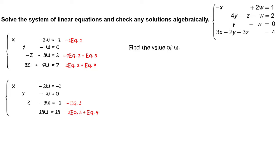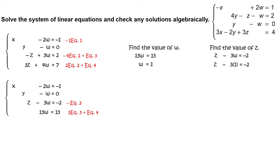Find the value of w. Write the equation 13w equals 13, then divide each side by 13 to get w equals 1. Find the value of z. Write z minus 3w equals negative 2, substitute 1 for w to get z minus 3 equals negative 2, then add 3 to each side to get z equals 1.